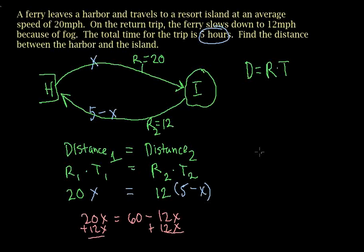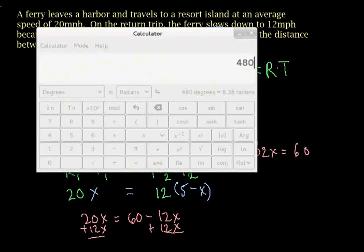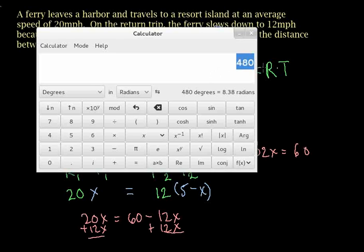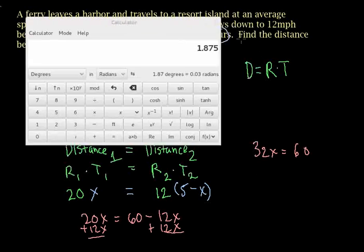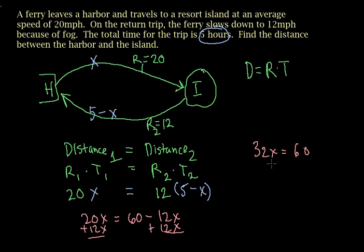You get 32x is equal to 60. Again, the trusty calculator. So now we're going to divide 60 by 32 and you get 1.875. So divide both sides by 32 - x is equal to 1.875.